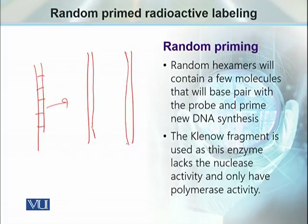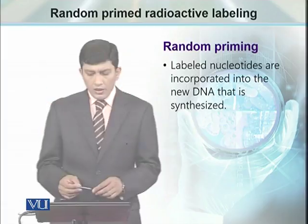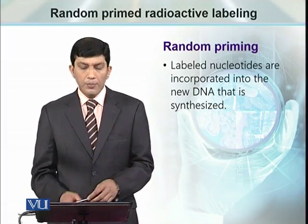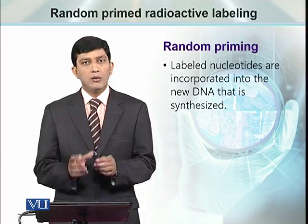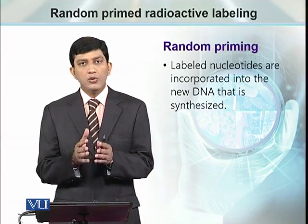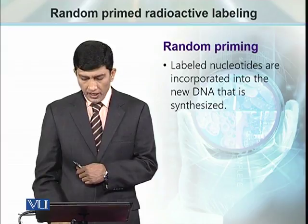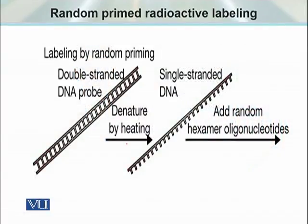The same principle is used to produce probes by the random priming method. The random priming method uses the Klenow fragment as the enzyme for polymerization. It needs a supply of nucleotides, and one of those nucleotides is going to be radio-labeled. When we subject the double-stranded DNA to denaturation by increase in temperature in the presence of a mixture of random primers, those primers bind with the template DNA and extend to prime the synthesis of a new DNA strand.